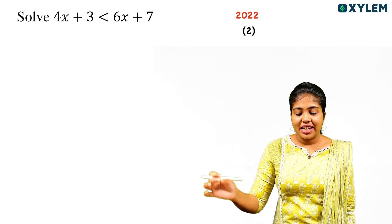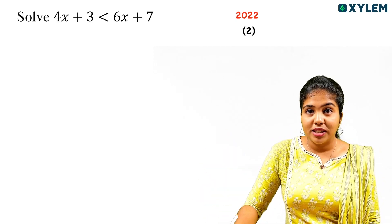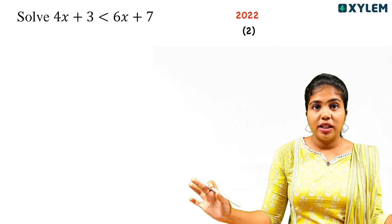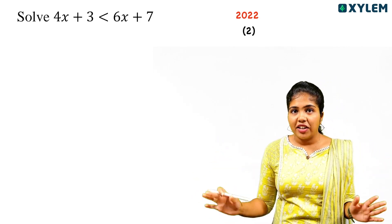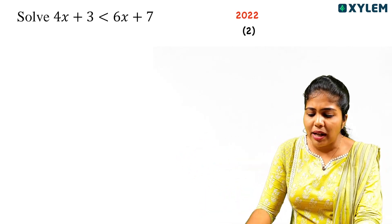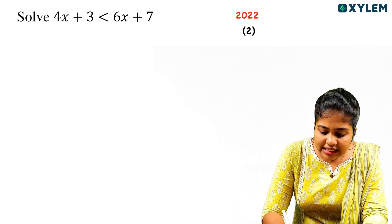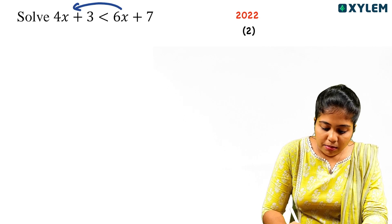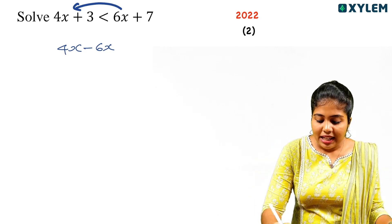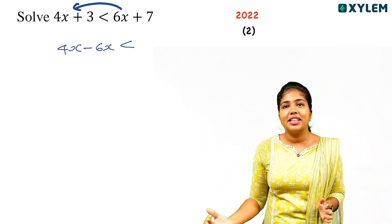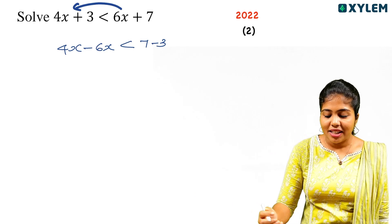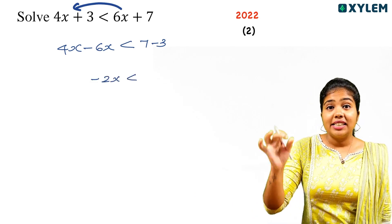They can ask: solve 4x plus 3 less than 6x plus 7. You can bring x terms to one side — 4x and 6x. If you move 6x to the left, it becomes minus 6x. Then 4x minus 6x is minus 2x, and 7 minus 3 is 4. So minus 2x is less than 4.